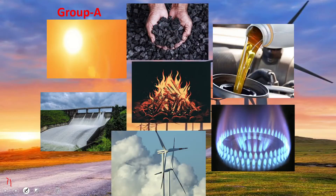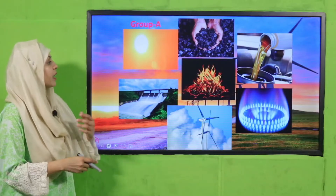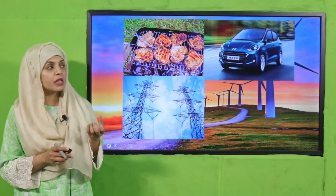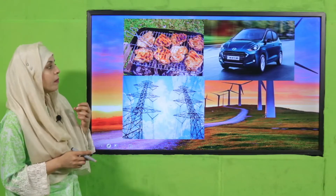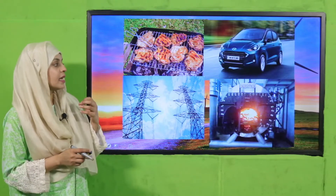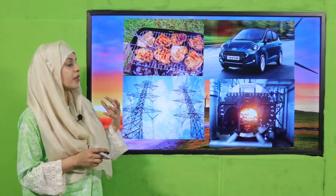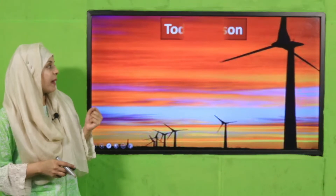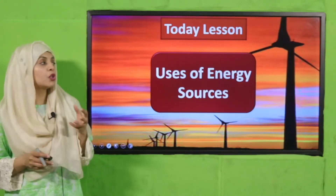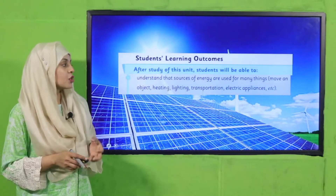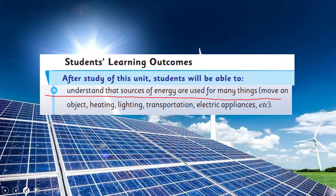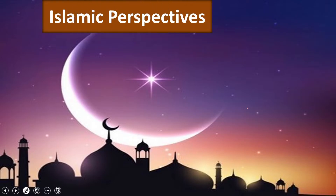For Group B, you have to identify the energy sources — coal, petroleum, electricity, Sun — these are different energy sources. In today's lesson we will discuss the use of energy sources. Students will be able to understand that sources of energy are used for many things: moving objects, heating, lighting, transportation, electrical appliances, etc.